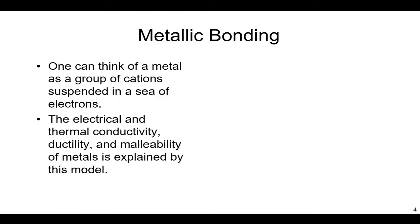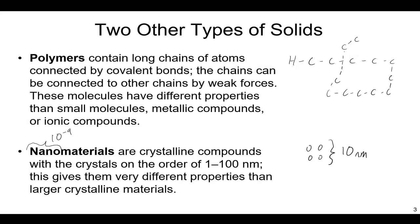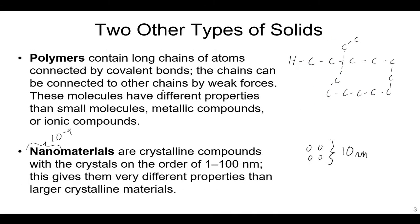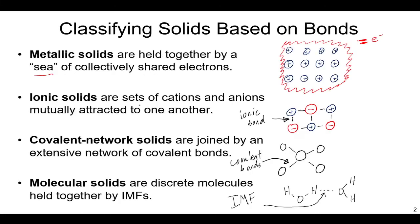Those are the six different types of solids. We'll expand on each of them: the rest of this video discusses metallic bonding, and future lectures will cover ionic, covalent, molecular, polymers, and nanomaterials.